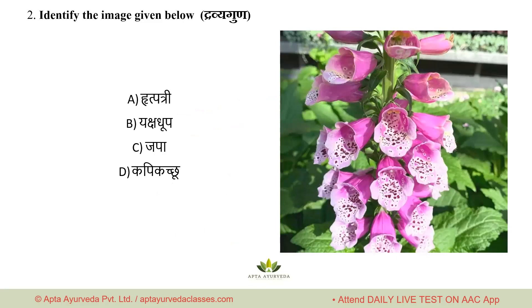Next: identify the image given below. This is a Dravyaguna question. AIPGT has started a pattern over the last two to three years of giving image-based questions — either Dravyaguna images, Shalya Tantra bandha images, or Yantra Shastra images. We need to build the habit of getting these right. Options are: A. Rutpattri, B. Yakshdhup, C. Japa, D. Kapi Kachhu. The right answer is option A — Rutpattri. Its family is Scrophulariaceae.